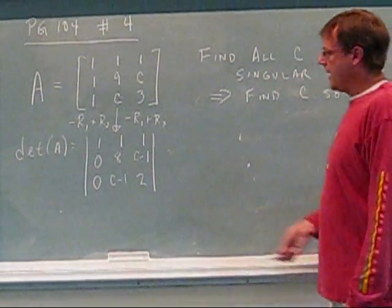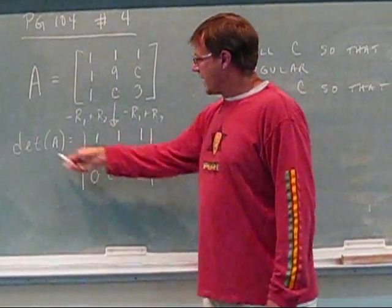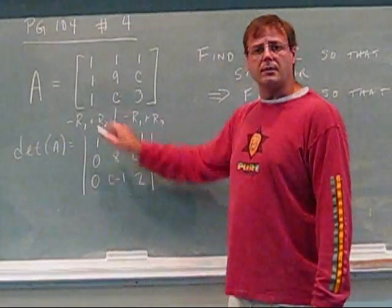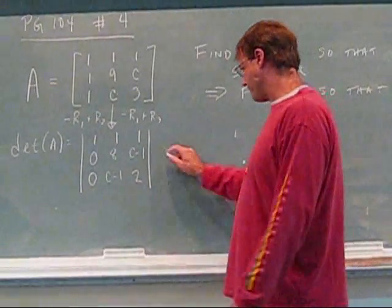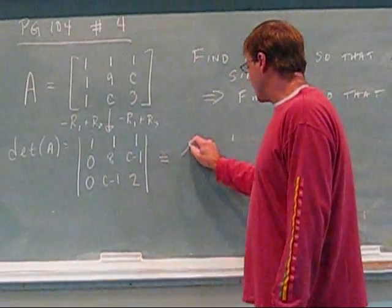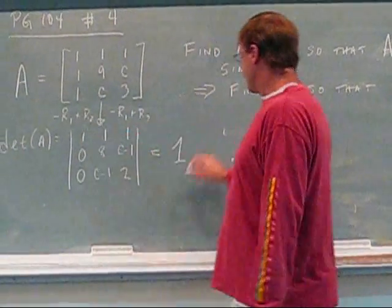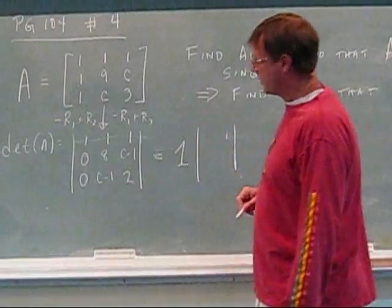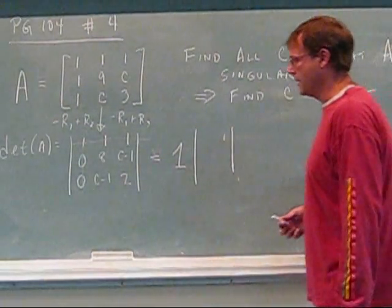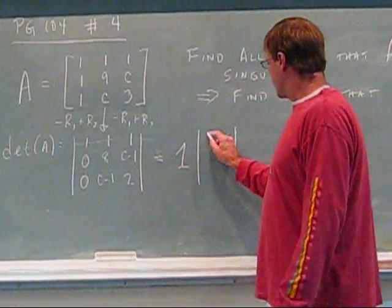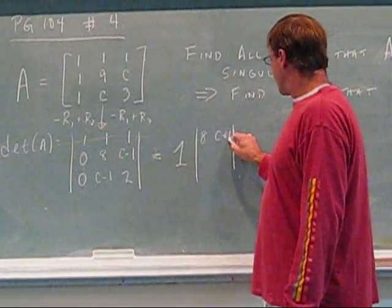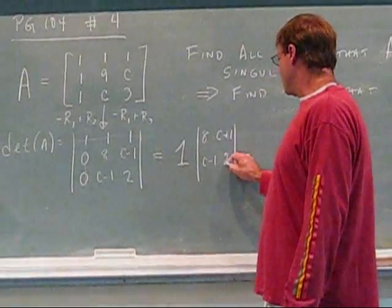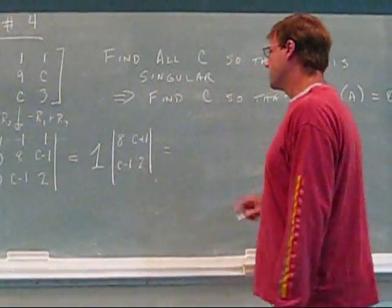Now I've got a column of zeros. When I compute my determinant, I'm going to expand along this first column because it has the most zeros. It's one — that's this one — times the determinant of what I have left over when I remove that row and that column. That block has an eight, a C minus one, a C minus one, and a two.